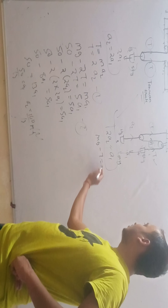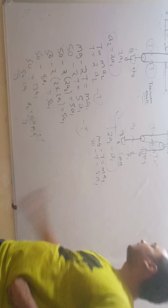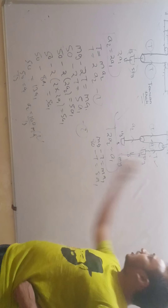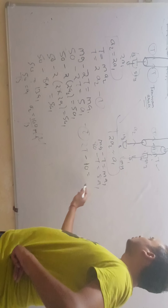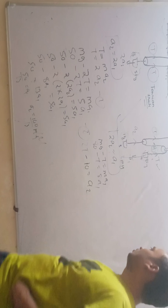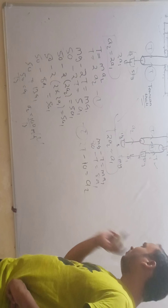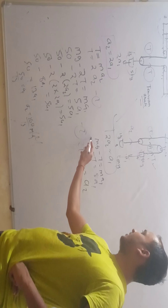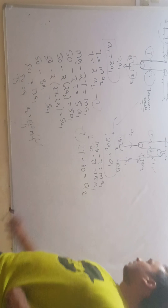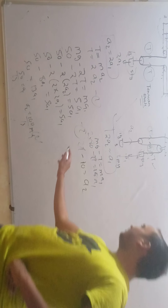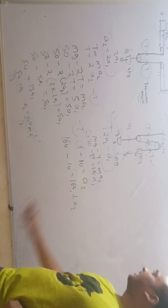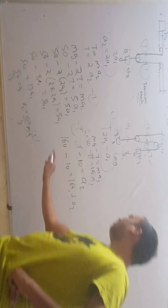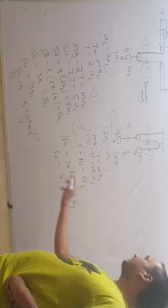Now we draw the free body diagram. We can write: Mg minus T equal to M times A1. We know M equals 8 kg, so 80 minus T equal to 8A1. Now for this block, if it comes down it will go up: 2T minus Mg — M is 1 so that's 10 — equal to M times A2, so 2T minus 10 equal to A2. Now multiply the second equation by 2 and add: 16 and 10 will cancel, giving 160 minus 10 equal to 16A1 plus A2. Since A1 equals twice A2, we can write it as 150 equal to 16 times 2A2 plus A2.